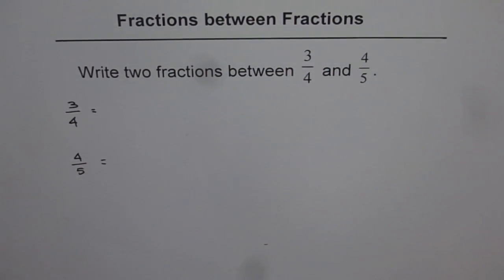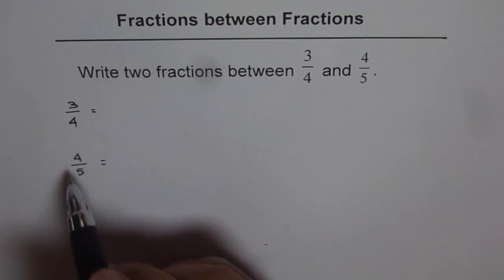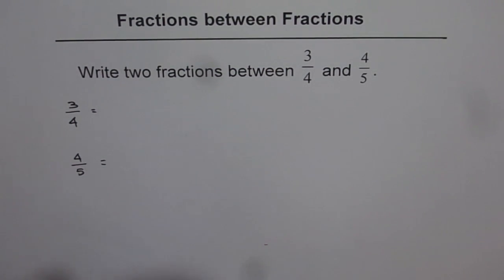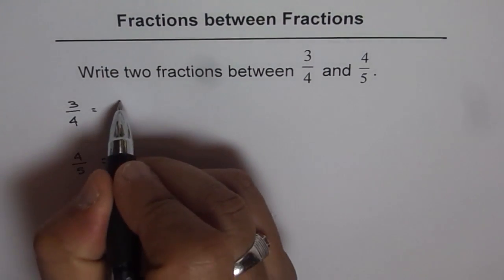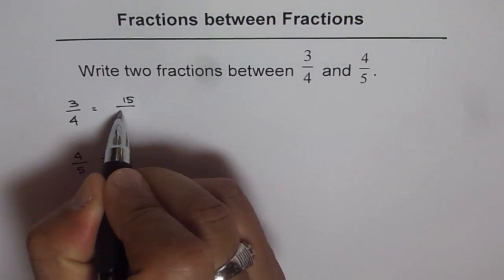The best way is to make their denominators the same. If we make a common denominator, it could be 20. Let's multiply the numerator and denominator of the first one by 5. That will give us 15/20.